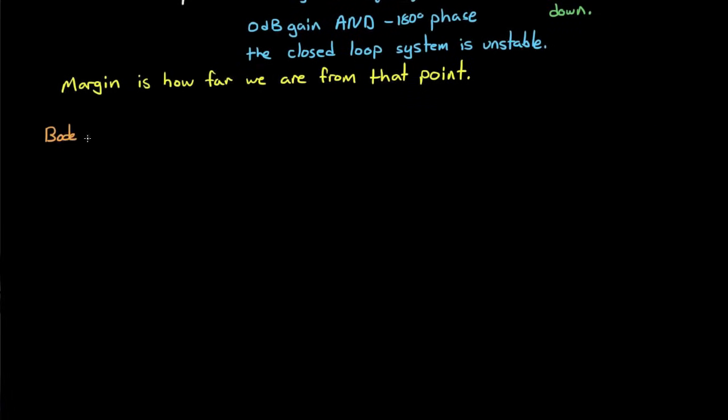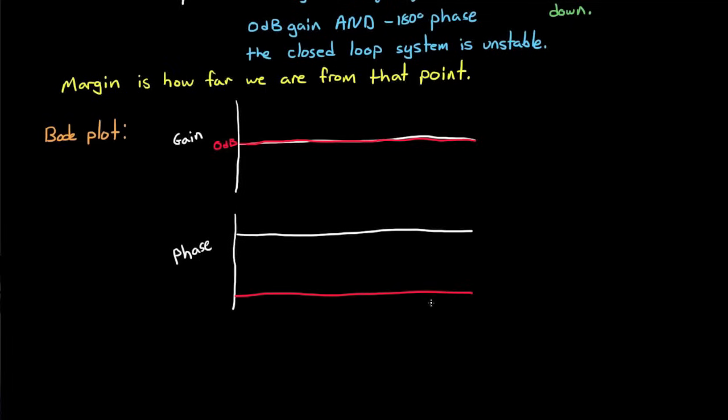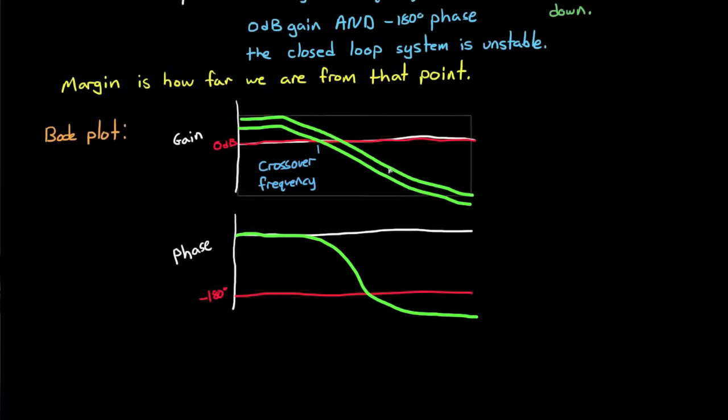So now we can finally talk about the Bode plot. And let me draw a blank one here. And you can clearly see the 0 dB line on the gain plot and the minus 180 degree line on the phase plot. We're trying to avoid this combination in our system at every frequency. Now I'll draw an arbitrary set of lines on the plot just to illustrate my point. This doesn't relate to any specific transfer function just yet.